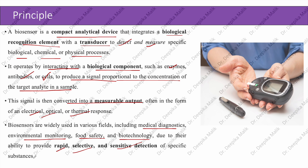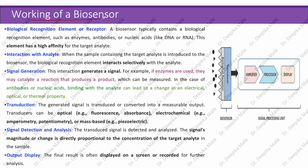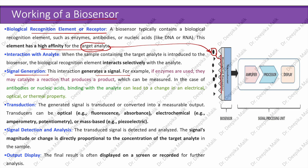A biosensor consists of a biological recognition element or receptor — such as enzymes, antibodies, or nucleic acids like DNA or RNA — which has a high affinity for the target analyte. When the sample containing the target analyte is introduced, the biological recognition element interacts selectively with it. This interaction generates a signal; for example, enzymes may catalyze a reaction producing a measurable product, while antibodies or nucleic acids binding with the analyte can lead to a change in an electrical, optical, or thermal property.